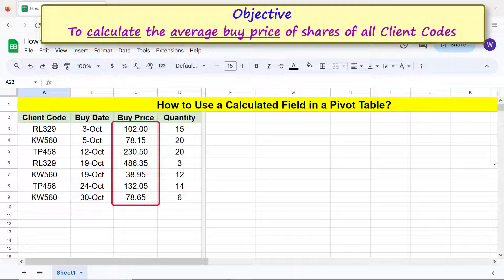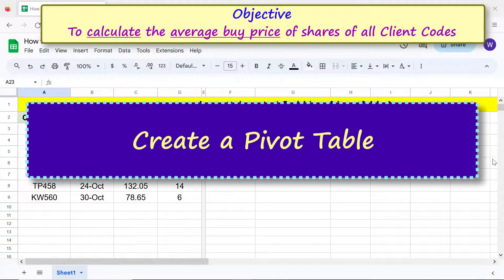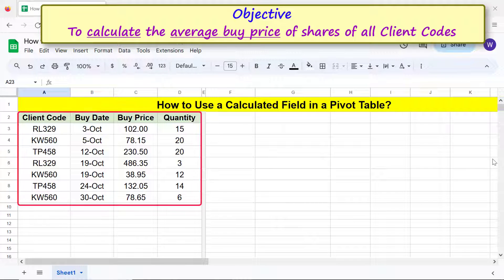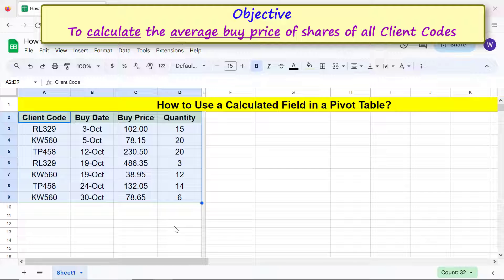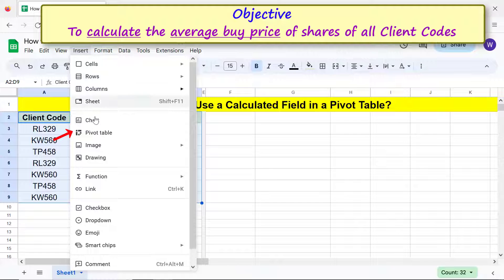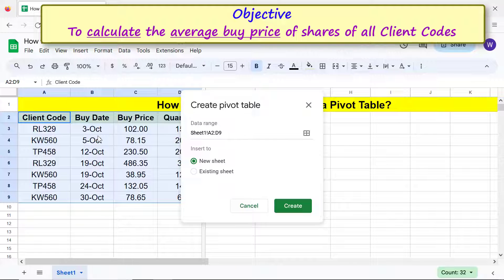Create a pivot table. Select the data range including the headers. Click Insert, Pivot Table. Select new sheet or existing sheet based on your needs. Click OK, click Create.